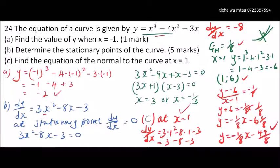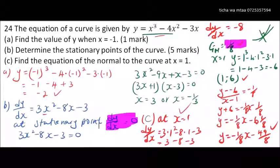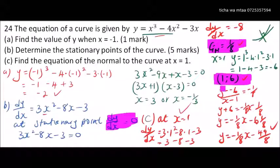That's how you work out that question. The key things to remember: at a stationary point, the gradient function dy/dx = 0. To find the equation of a line you need the gradient and a point — something you learned in Form 2. Those are the essential tools for this type of question.